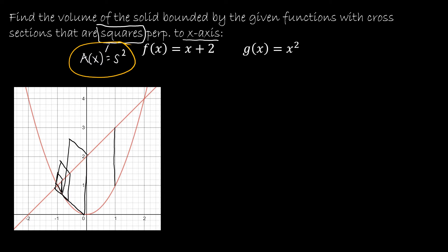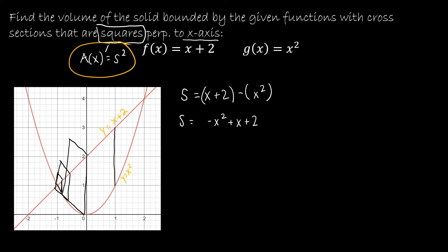What I need to know, based on the fact that I'm using s², the side squared, is how to find the side of each of those squares standing straight up. The top function is x + 2 and the bottom function is x². So y = x + 2 and y = x². To find the distance between those two lines — the side of the square — I take the top function minus the bottom function, which gives me −x² + x + 2.